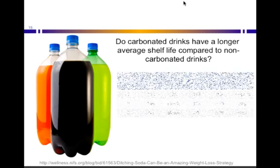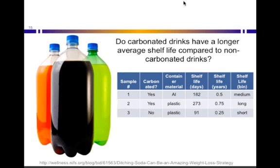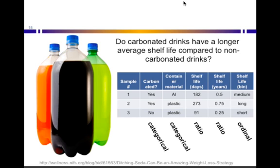Now for the answers. Carbonation status is just yes or no — that's categorical. Container material is just what type of material it is — also categorical. Shelf life in days and shelf life in years are simply a change in units — both are ratio variables. There's a true zero, and you can fairly say 200 days is twice as long as 100 days. You definitely know the relative number of days or years between any two data points. But if all you know is whether shelf life is short, medium, or long, then you're down to ordinal data — you don't know as much as when you had the number of days.